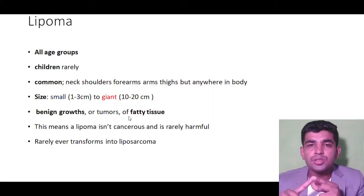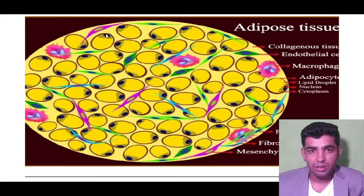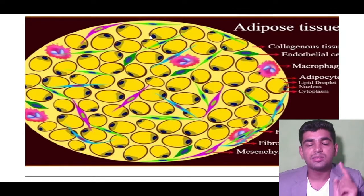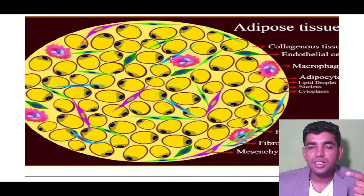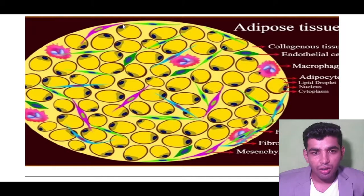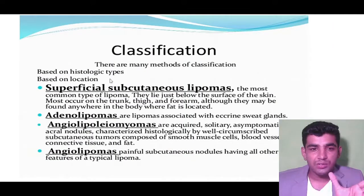Lipomas are tumors of fatty tissue. Histologically, the fatty cells show a signet ring appearance — the nucleus is present on the peripheral part of the cell, with cytoplasm filling the center due to accumulation of fatty acids. This peripheral displacement of the nucleus gives the cell its signet ring appearance.